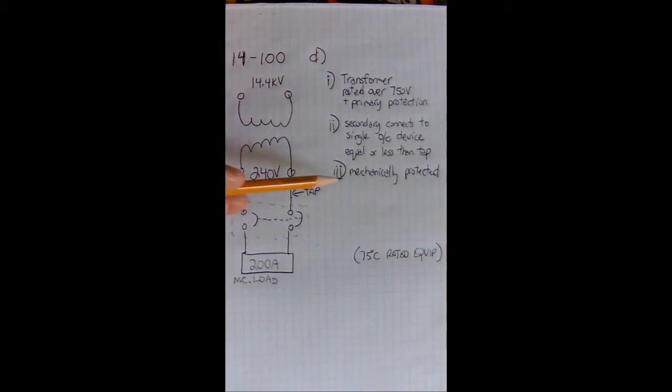And then item 3 says mechanically protected, so we're going to assume that all this is in EMT or some rigid steel. Okay, let's start with a calculation.